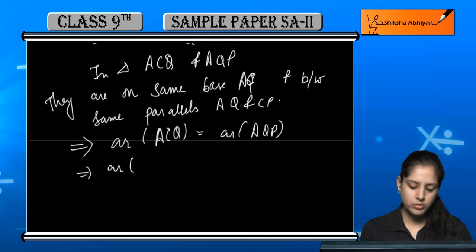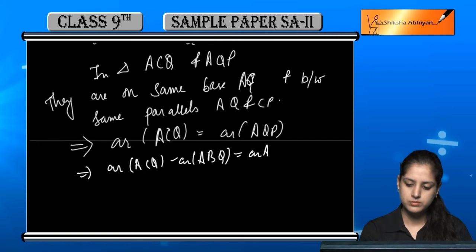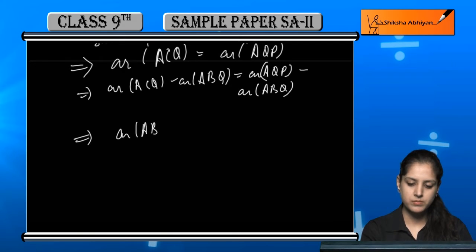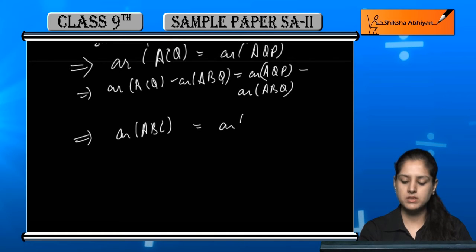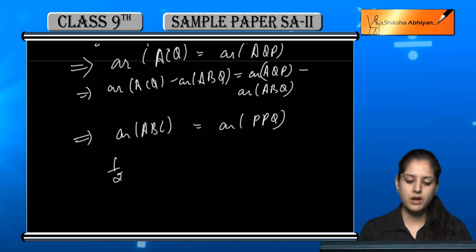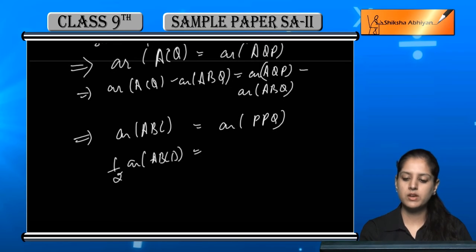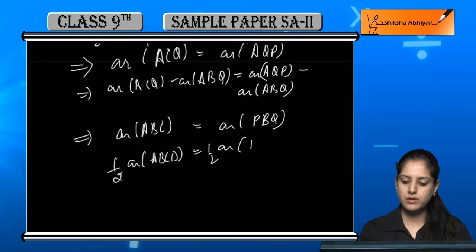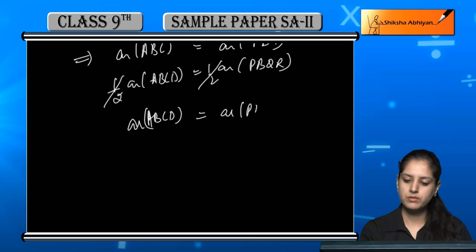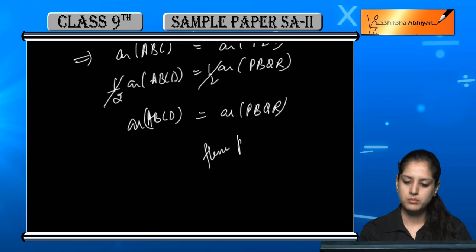अब अगर हम दोनों में से area of △ABQ subtract कर दें, तो △ACQ में से △ABQ subtract करने पर △ABC बचता है, और △AQP में से △ABQ subtract करने पर △PBQ बचता है. यानी area of △ABC = area of △PBQ. अब equations 1 और 2 से — half area of ABCD = half area of PBQR, जिससे half-half cancel होकर area of ABCD = area of PBQR. और यही हमें prove करना था.